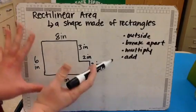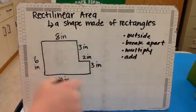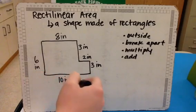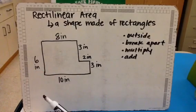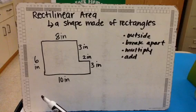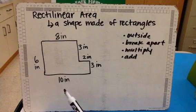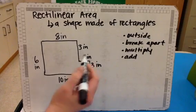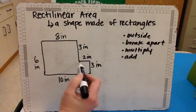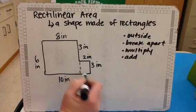Either way, it's going to get you the same total area because nothing's changing about our rectilinear shape. It's just, it'll change what multiplication equations I use. So you could kind of practice that with your third grader, breaking it apart in different ways and seeing that you're still getting the same total area. So I'm going to go ahead and I'm going to break it apart right here, right there.